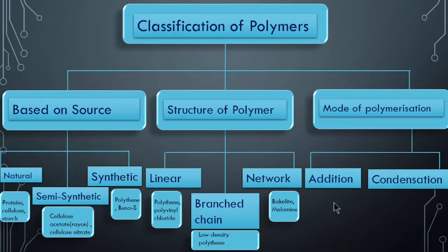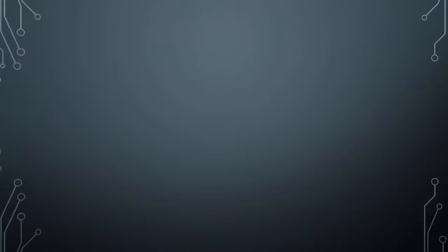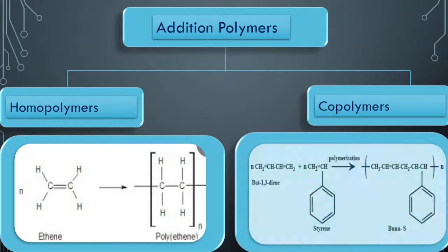We will now see the mode of polymerization - that is addition and condensation, which is very important. There are two types of polymers: homopolymers and copolymers. In exams, a reaction is given and you have to do polymerization and tell the final product. Then you need to think whether it is addition polymerization or condensation polymerization.